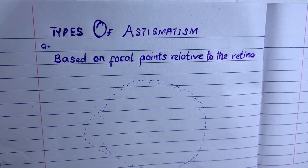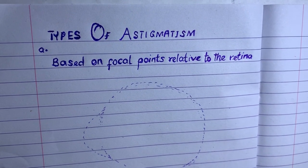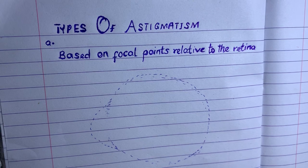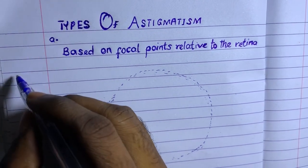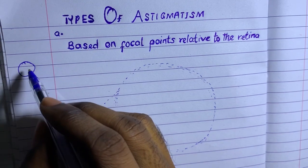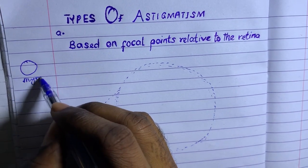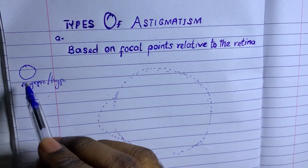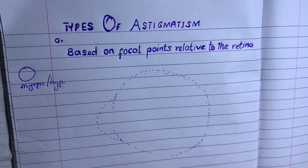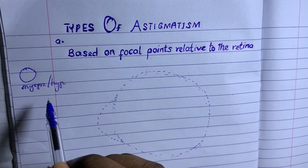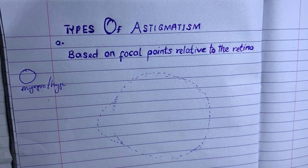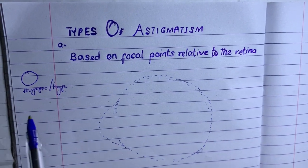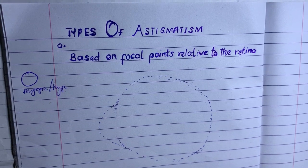Today we want to consider types of astigmatism, particularly based on focal points related to the retina. An eye can be either myopic or hyperopic, but one eye cannot be myopic and hyperopic at the same time. However, with astigmatism it can co-exist with any of these. Based on the focal point relative to the retina, astigmatism involves two incoming light rays because the meridians are not the same.